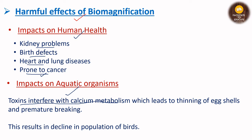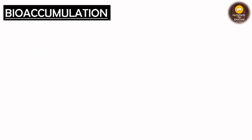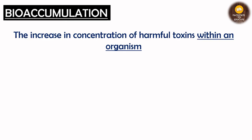Interference with calcium metabolism leads to thinning of eggshells and premature breaking. The eggshells become very thin and can break due to environmental effects. This results in a decline in bird populations, which ultimately impacts the food chain, food web, and the ecosystem as a whole. These are the harmful impacts of biomagnification.